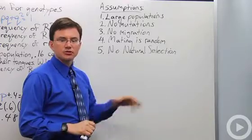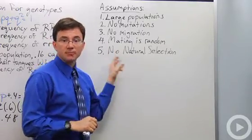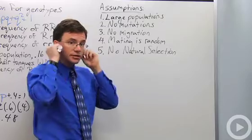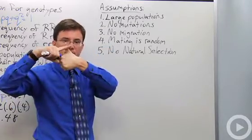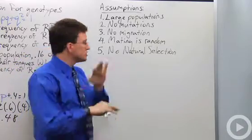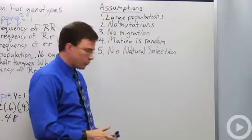And no natural selection. There's no advantage or disadvantage to that particular trait whether it's tongue rolling, the shape of your ear lobes, whether or not you have a widow's peak, or whether or not your thumb goes straight up like this or bends backwards weirdly. So these are the assumptions of the Hardy-Weinberg equation.